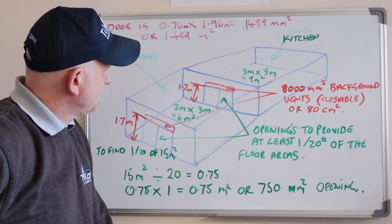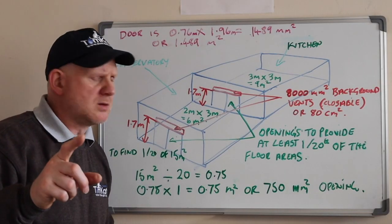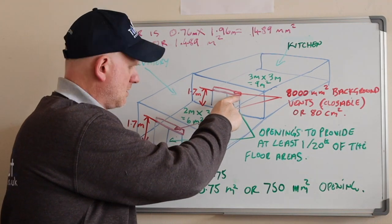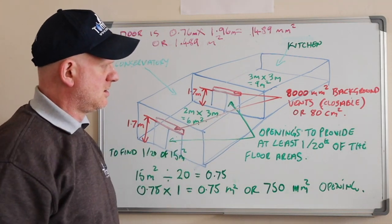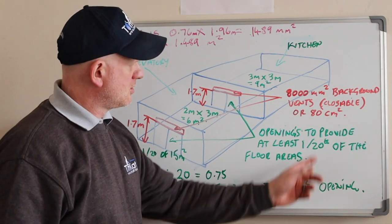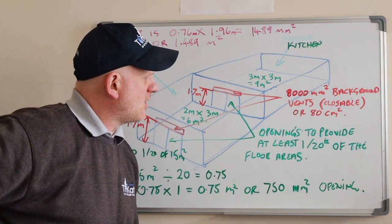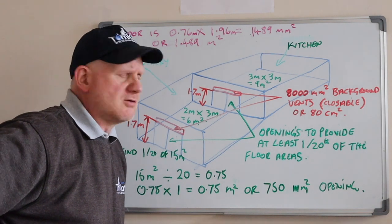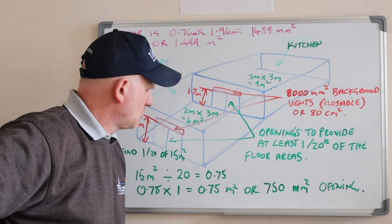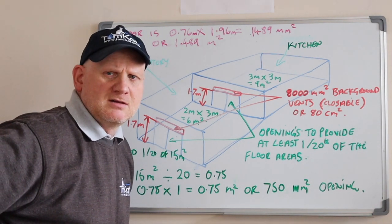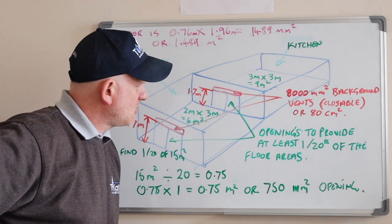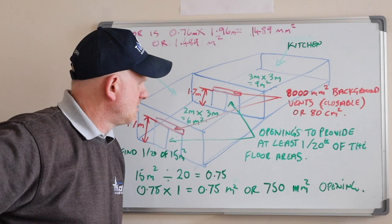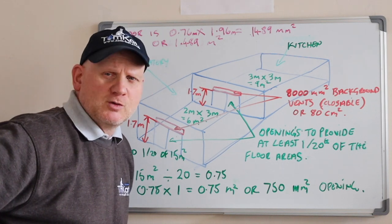If you had a window in the kitchen wall to the conservatory and a window in the conservatory wall to outside, and when opened they provided more than 80 centimetres squared — the Building Regs do say it has to be openable, so arguably you could use a window for that purpose.